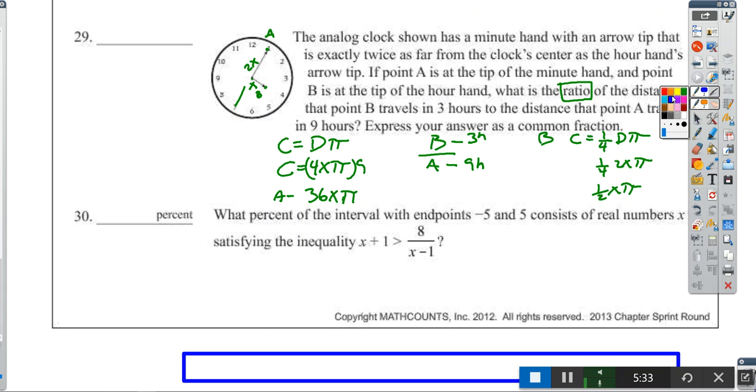This may look scary, but it's not. For B we have 1/2 X times pi over 36X times pi. The X times pi cancels out. So I have 1/2 over 36. Multiply numerator and denominator by 2. 2 times 1/2 is 1, 2 times 36 is 72. The answer is 1/72.